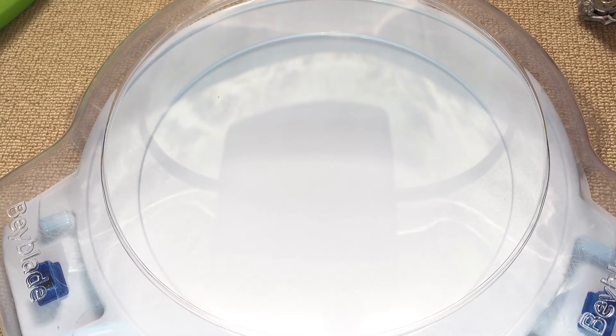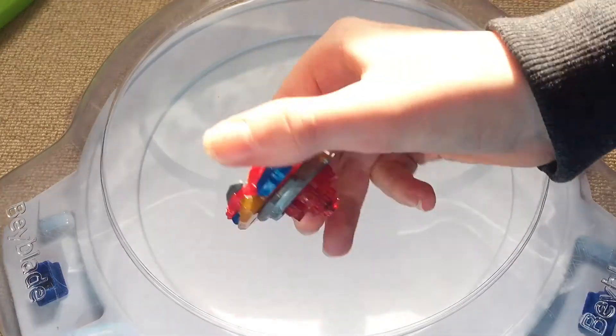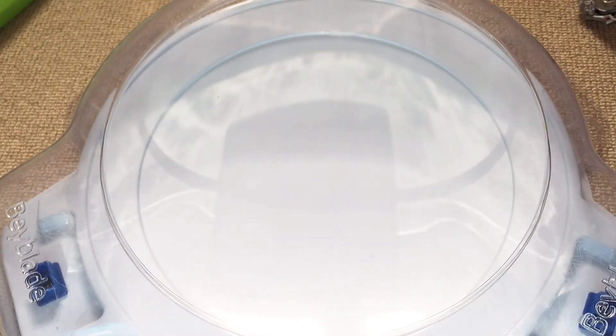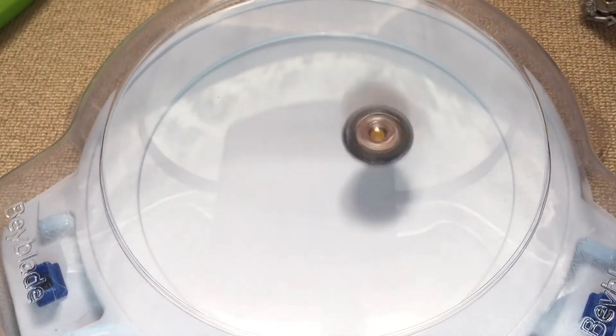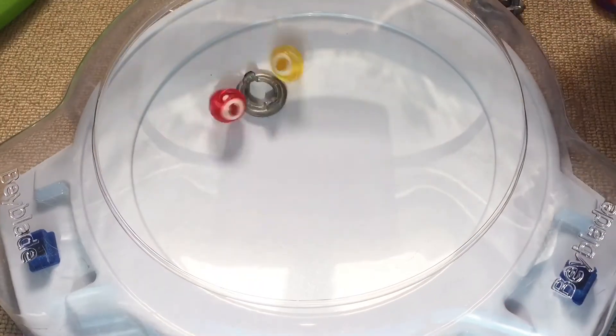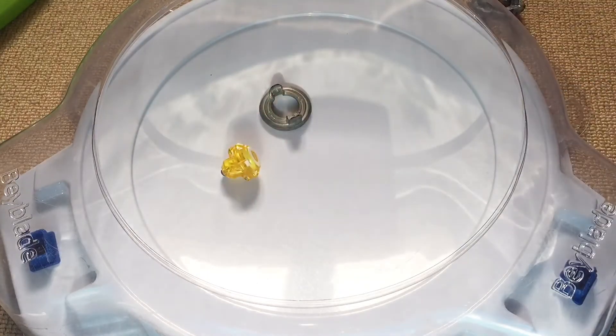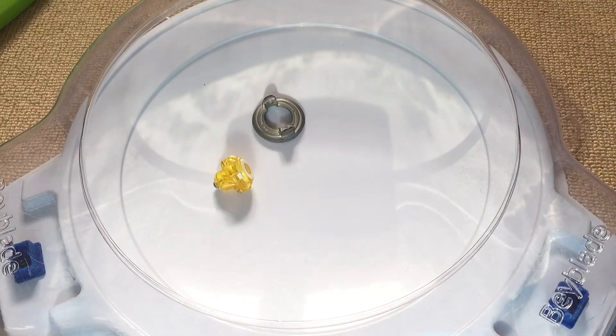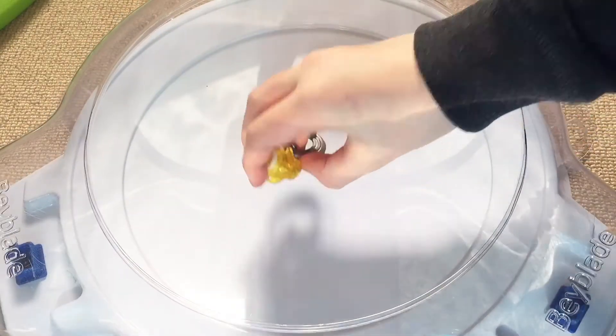So we're now going to try it against Cho Z Achilles, just because it'll be fun. This will probably go so badly. 3, 2, 1, go shoot! 2, 1, go shoot! Oh my goodness, we all know who won, but I'm surprised Achilles burst at all really. Even if the disc hit it.